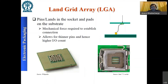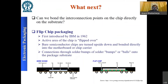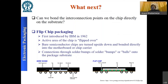The three most common area array package types today are pin grid array, ball grid array, and land grid array. There are also other socket technologies such as MPI (metalized particle interconnect) — a soft material with metalized particles that form a continuous electrical path when compressed under a certain pressure. Wire bonding is still constrained to peripheral connections, but flip chip technology addresses this by allowing connections across the entire active surface of the die, not just the periphery.